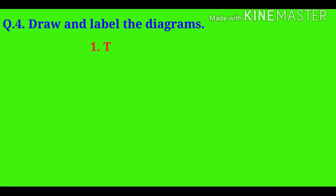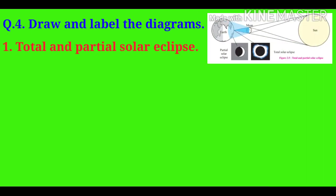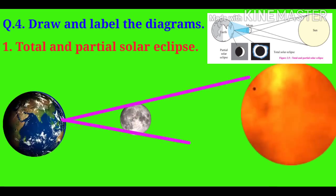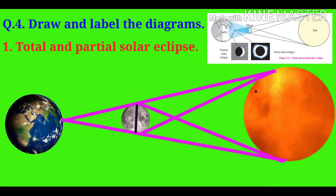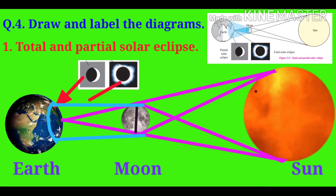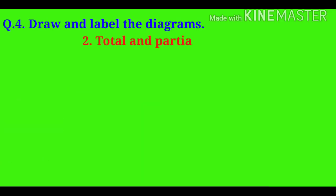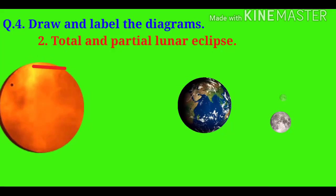Question number four: Draw and label the diagrams. First one is total and partial solar eclipse. Second one is total and partial lunar eclipse.